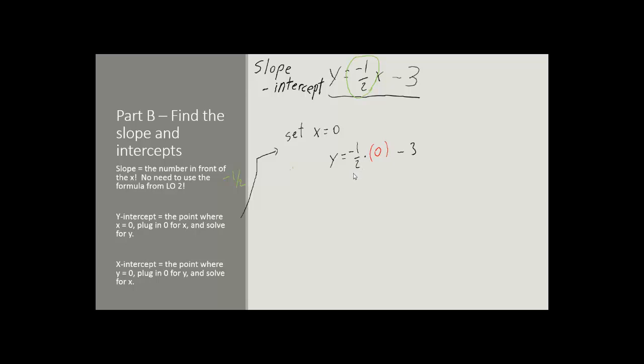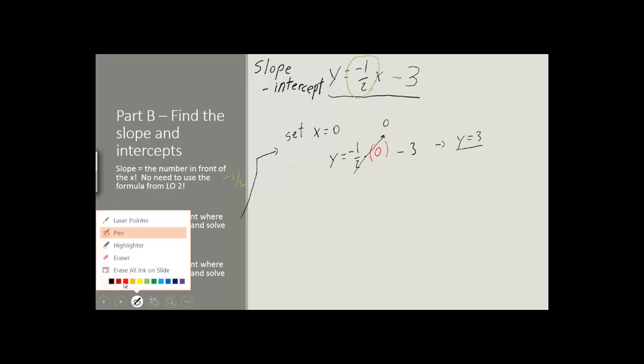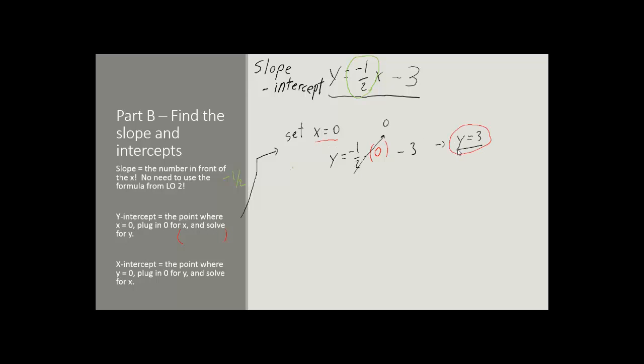Well, of course, negative 1 half times 0 simplifies down to 0. So we get that y equals 3. Now the way they want you to answer this question of the y-intercept is to write it as a point. I'll write it in red here. So you don't just put 3. You put the x value and then the y value. Write it as a coordinate. So our answer for the y-intercept would be 0, 3.